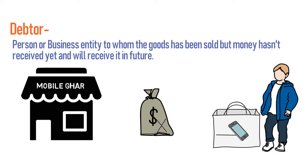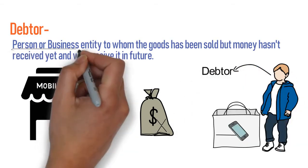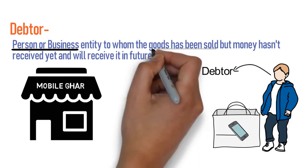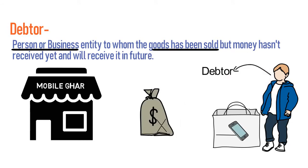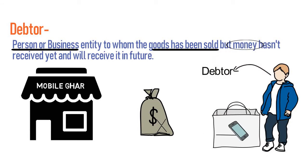You will record this transaction in the books of Mobile Girl. In the books of Mobile Girl, Arav will be recorded as a debtor. A debtor is any person or business entity to whom you have sold the goods but have not received money yet, and will receive it in future.